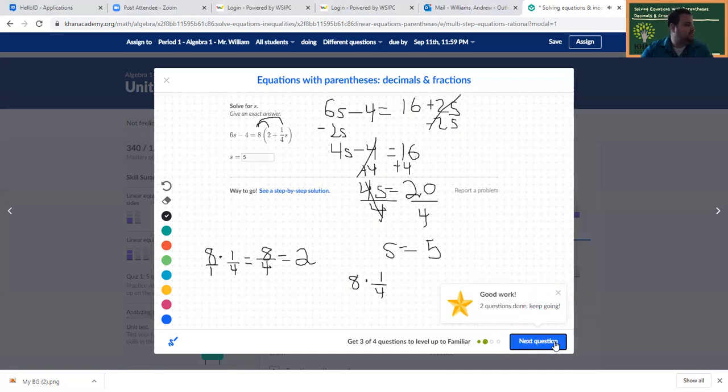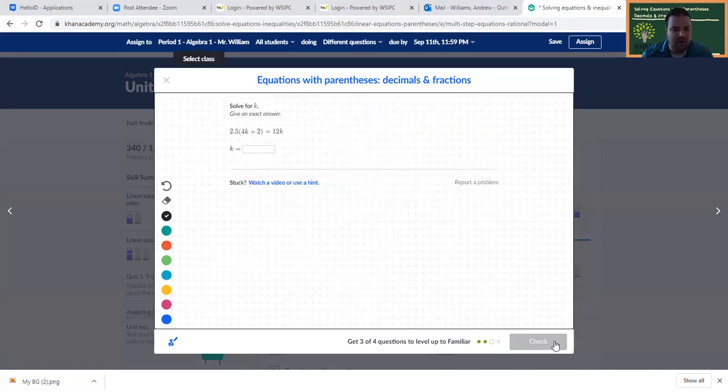Halfway there. 2 to go. Let's go. Distributing 2.5 across parentheses here. 2.5 times 4. A lot of these are simpler decimals and fractions to work with, but you can think of it as $2.50. $2.50 plus $2.50, $5. Plus $2.50, $7.50. Plus $2.50, that's $10. So you got 10K.